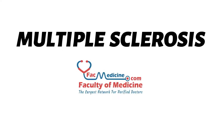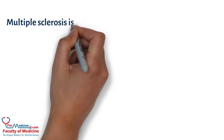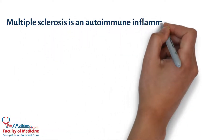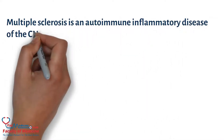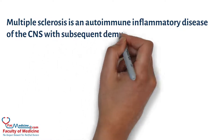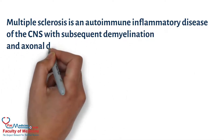Multiple sclerosis is an autoimmune inflammatory disease of the central nervous system with subsequent demyelination and axonal damage.